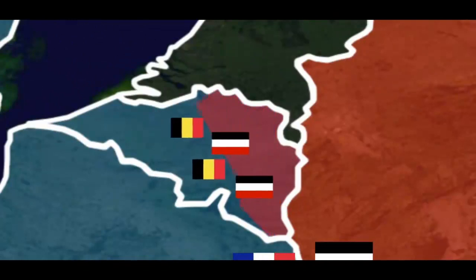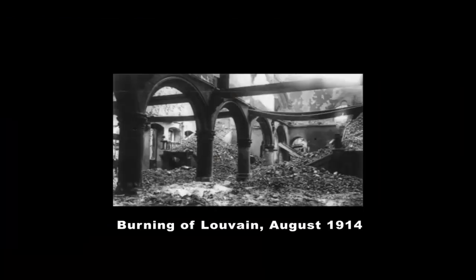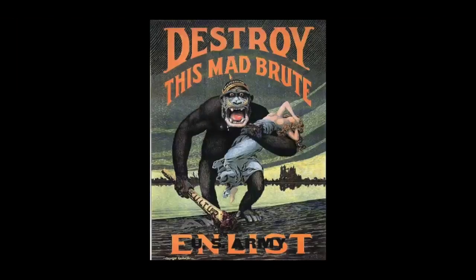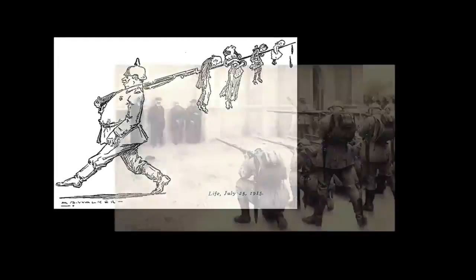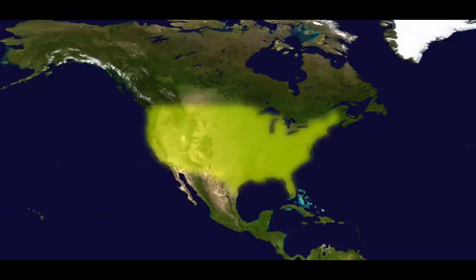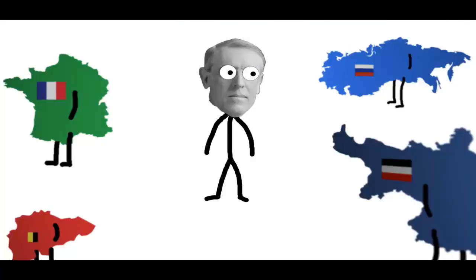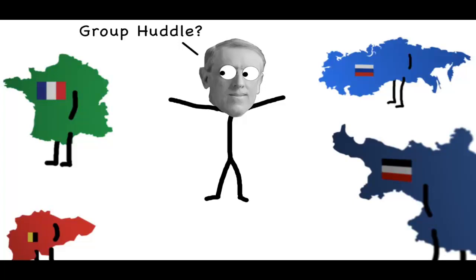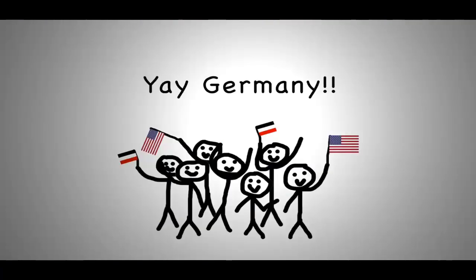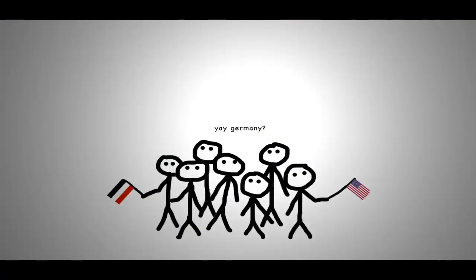Germany pushed through Belgium, committing atrocities along the way — their soldiers even wore spikes and skulls on their uniforms. The Allies launched a propaganda campaign, which had a notable influence around the world, particularly in America. US President Woodrow Wilson saw himself as a peacemaker and spent much of the war trying to negotiate. There was also a large ethnic German population in the US who had initially cheered for Germany but became less enthusiastic as news of the atrocities spread.